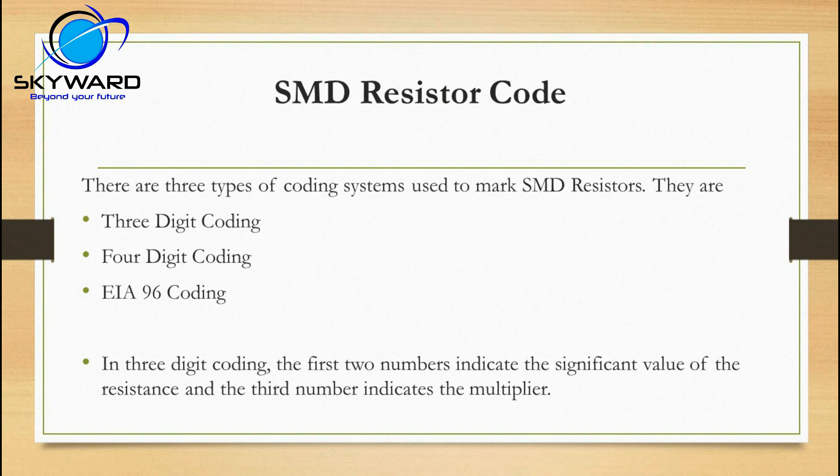Next, SMD resistor codes. In SMD resistors there are three types of codes: one is a three-digit code, the second is a four-digit code, and another is EIA-96 coding, which is very rare. The first two are more commonly found. Let's look at the three-digit coding first.